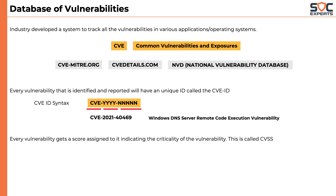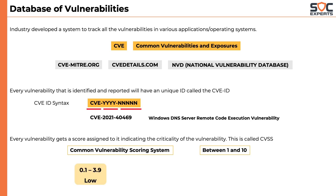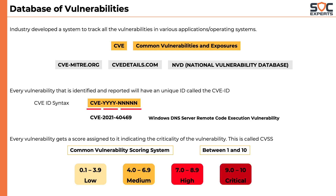Every vulnerability also gets a score assigned to it indicating its criticality. This is called CVSS — Common Vulnerability Scoring System. The score is a number between 1 and 10. A CVSS score between 0.1 and 3.9 is considered low impact; between 4 and 6.9 is medium; between 7.0 and 8.9 is high; and anything above 9 is considered critical.